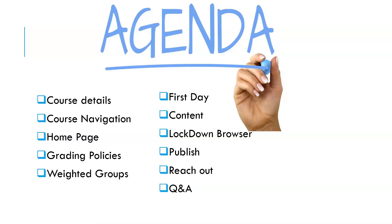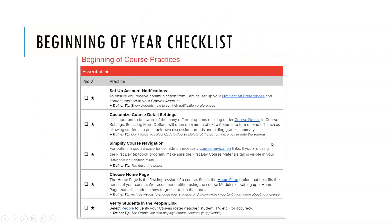There's a lot on our agenda today so we're going to move kind of fast, but there is a beginning of the year checklist that goes over all of these items and even more, with links to guides in Canvas showing you how to do everything. If there's something you're not exactly sure how to do, you'll be able to come to this checklist. Additionally, this webinar is being recorded and will be put in the Canvas Faculty Hub in the Recorded Webinars tab.